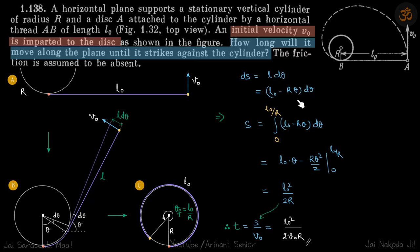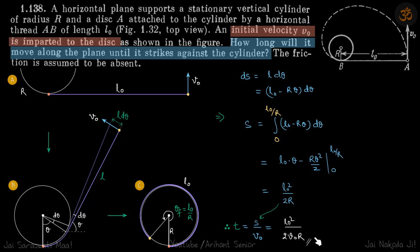We integrate this expression. Initially theta is zero, and when it is completely wrapped, theta equals l0/r (arc length divided by radius). Integrating ds = (l0 − r·θ)·dθ from 0 to l0/r gives the total distance s. Since they have asked for time, the time taken is s divided by v0.